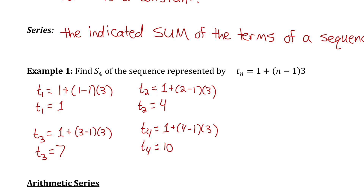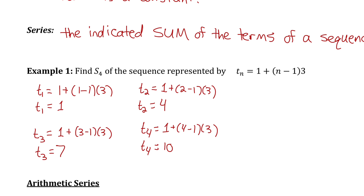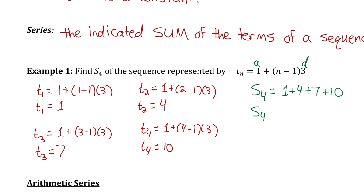These terms just go up by 3 each time, so this is clearly an arithmetic sequence. I can tell this is the formula for the general term of an arithmetic sequence, where a is the first term and 3 is d, the common difference. Now I want to find the sum of all four terms, so I'll add them together. Adding 1 + 4 + 7 + 10, the sum of that series is 22.